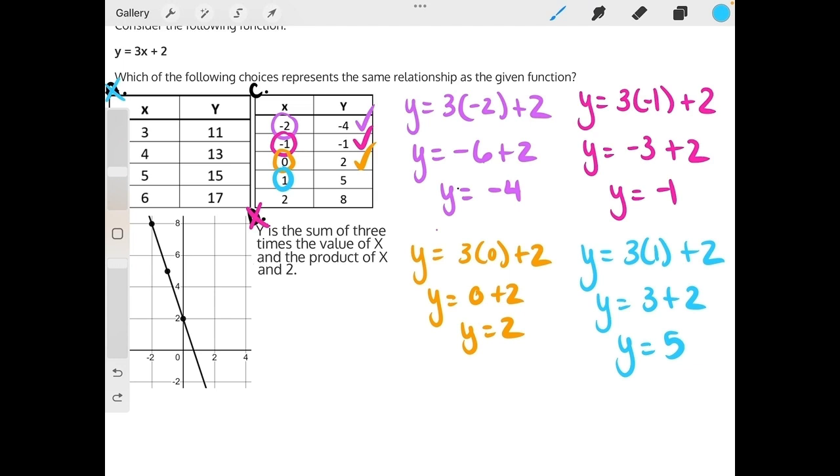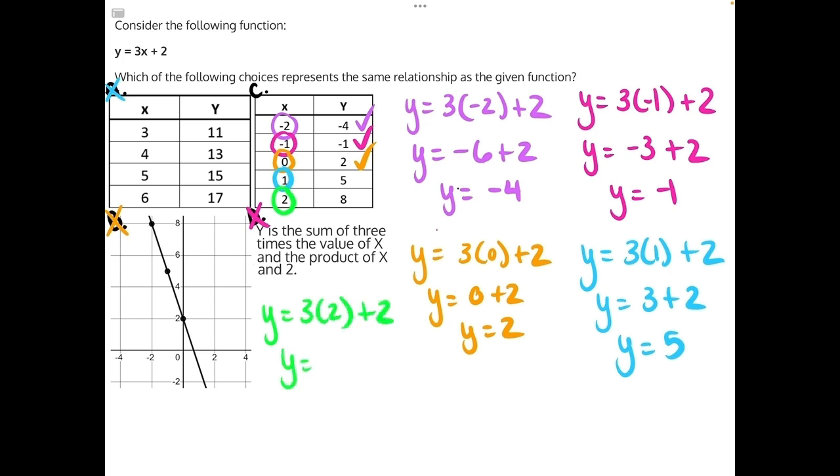And finally, we will have y is equal to 3 times 2, plus 2. y is equal to 3 times 2 is 6, plus 2 does give us 8. So there you have it. Answer choice C is our correct answer.